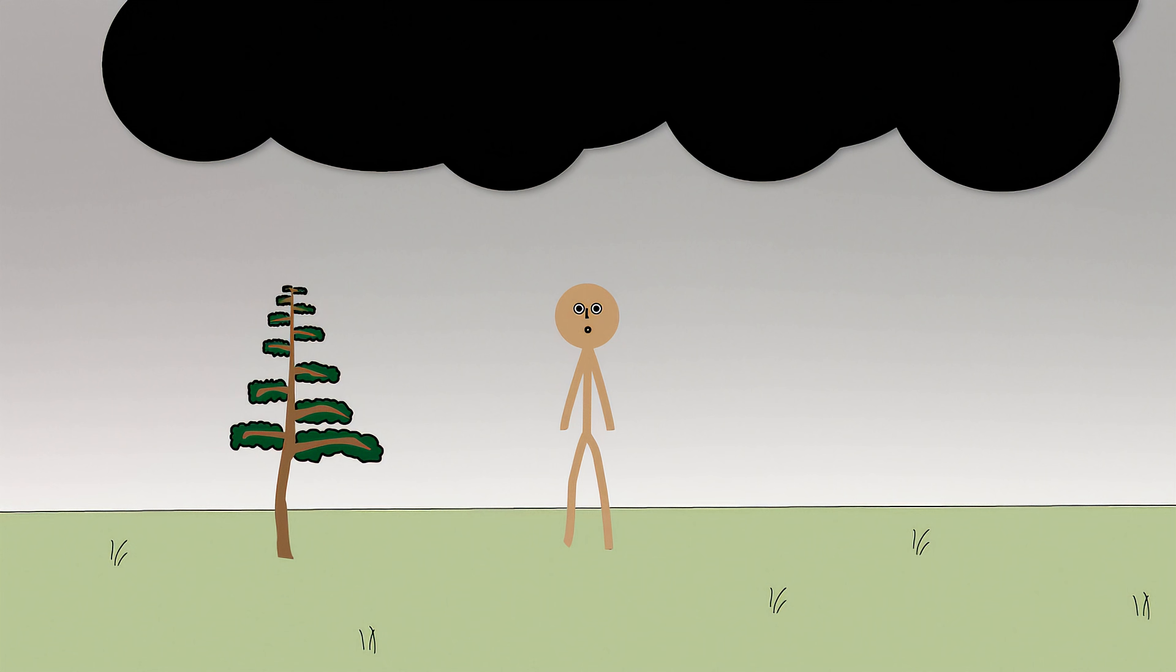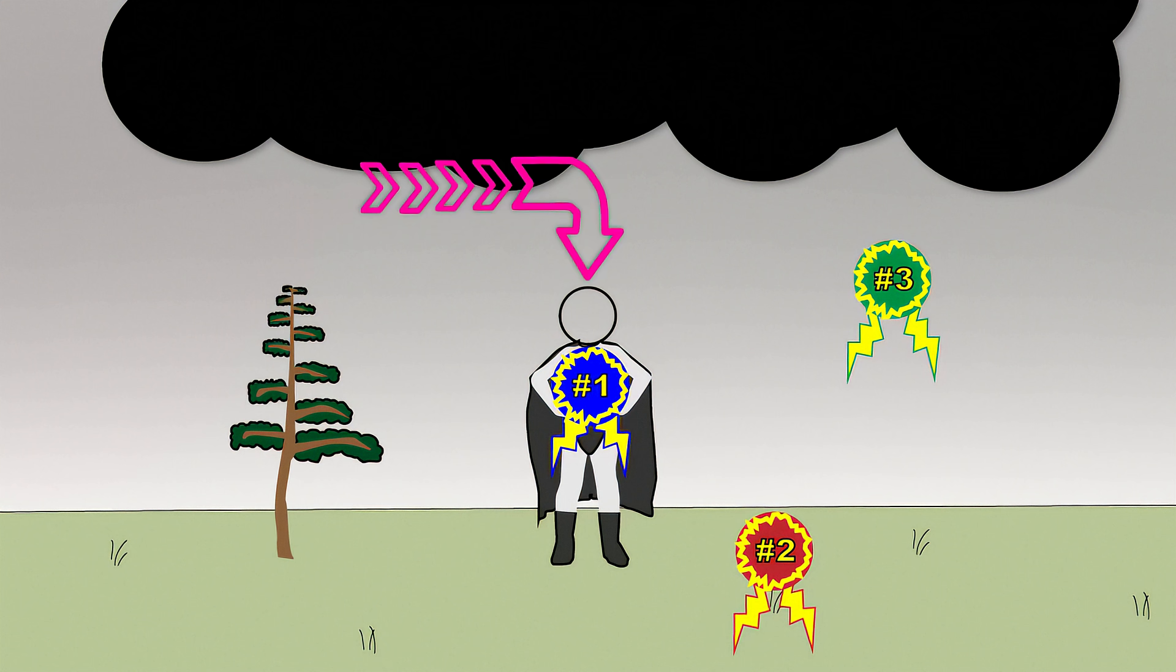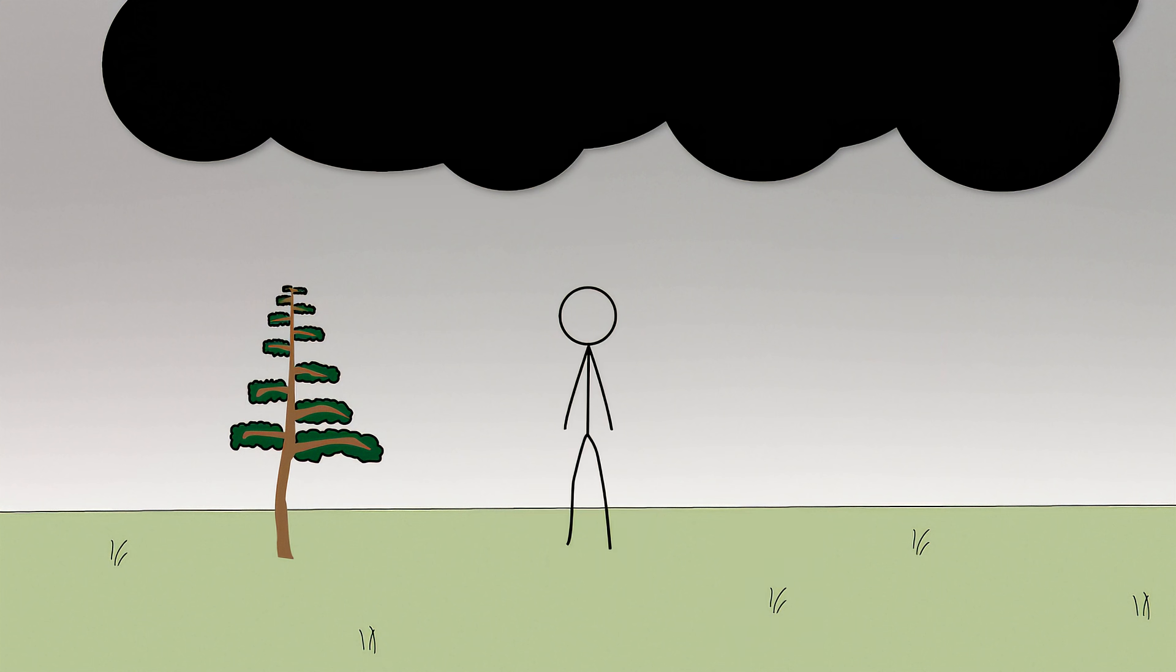In that case, whether you're naked or in costume, your body unfortunately happens to be a better electrical conductor than both air and soil, so it provides a great shortcut for traveling current. Stand upright and you're the fastest route for a descending lightning bolt.